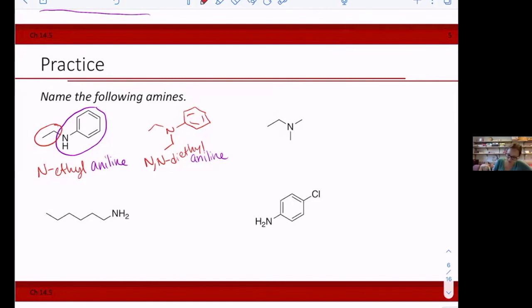We have this amine here. So we have 1, 2, 3, 4, 5, 6 carbons in this only chain that's on there. So I'm going to make that hexyl. So the full name of my amine is going to just be hexyl amine.